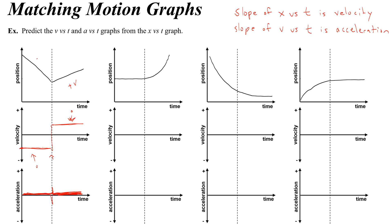Now let's talk about this second graph. Here I have a position versus time graph that doesn't move. The slope is zero, which tells me I have zero velocity, so I draw a line at zero on my velocity versus time graph. It's not changing, which means I have zero acceleration, and I indicate that with a flat line on my graph.